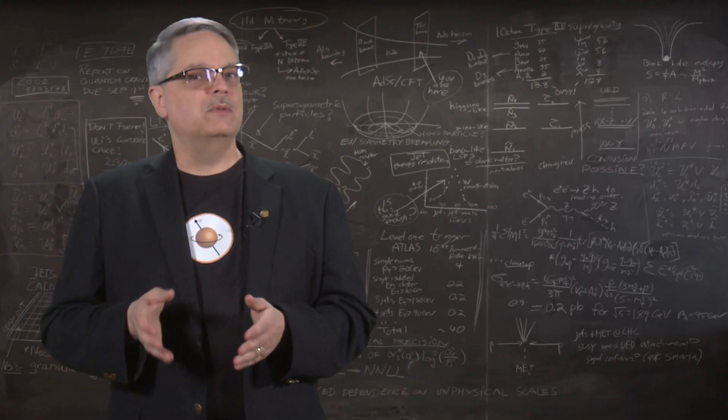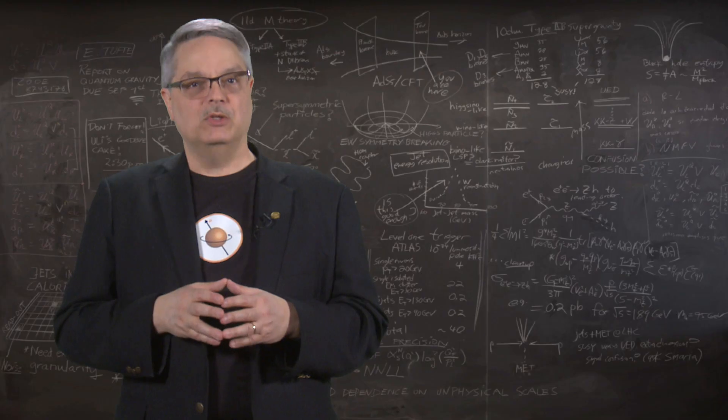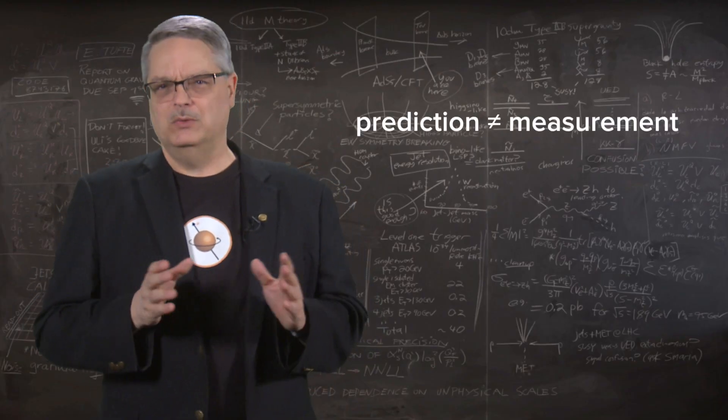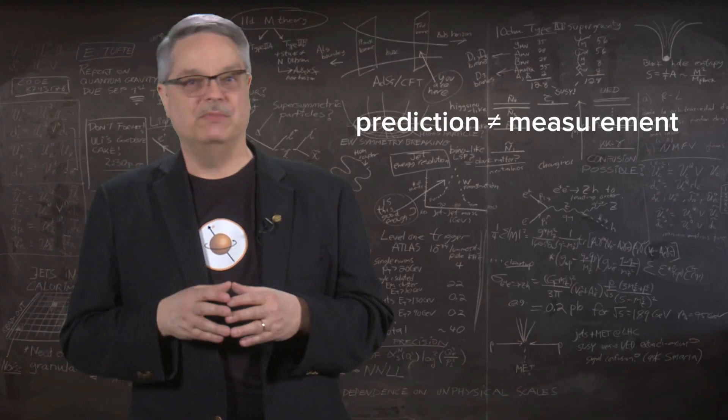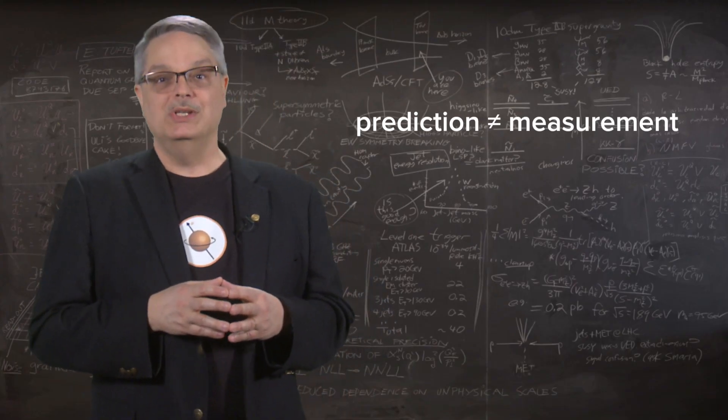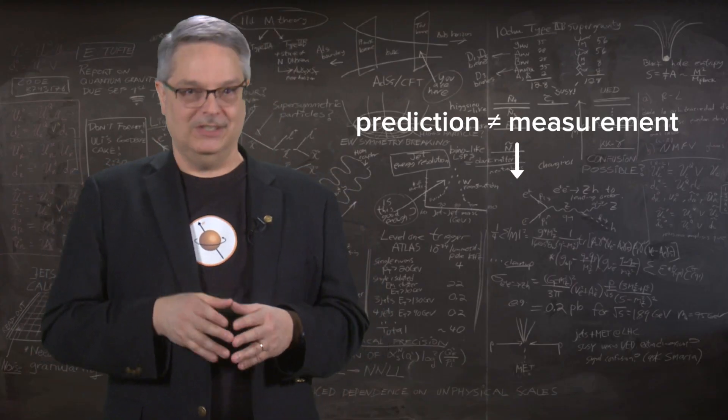When physicists study the magnetic moment of the muon, there is a discrepancy between the prediction and the measurement. And whenever data and calculations don't agree, that could well mean that you found something that your theory can't predict. We scientists have a name for that. We call it a discovery.